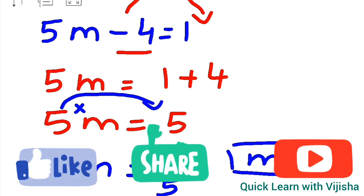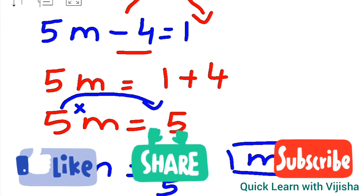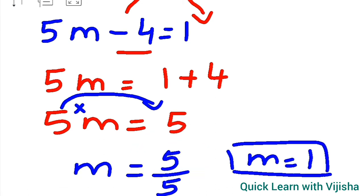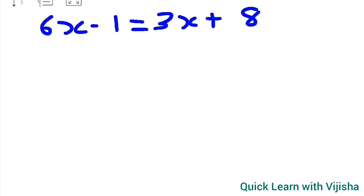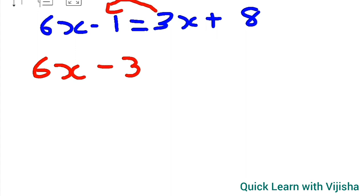If you find my video helpful, please like, share it with your friends, and subscribe to my channel. Now the fourth question: 6x minus 1 is equal to 3x plus 8. We put variables together and numbers together. The variable terms are 6x and 3x — since 3x is on the right in plus form, it comes to the left as minus 3x.